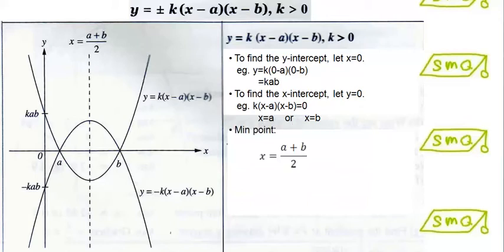To find the minimum point, we have to take x equal to a and x equal to b, add them together and divide by 2. With these three points, we can join them together to get the graph in red.